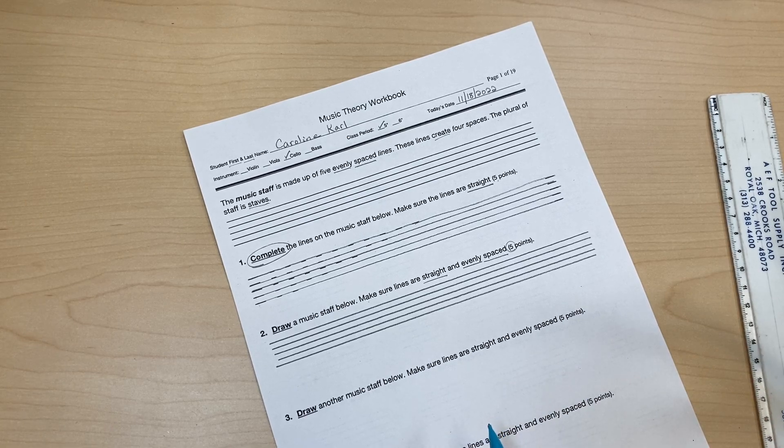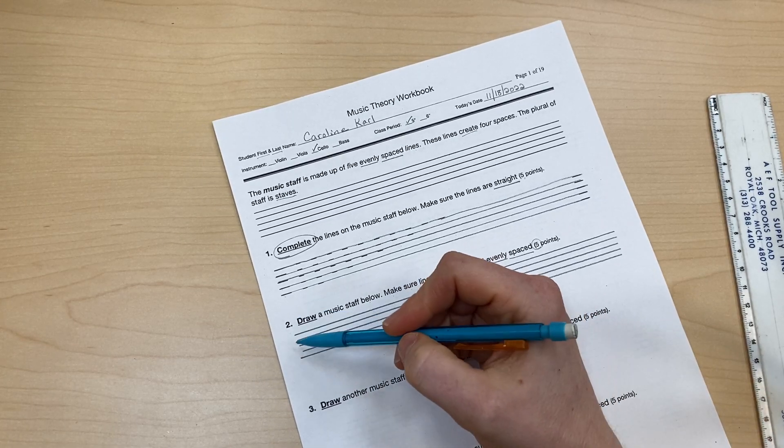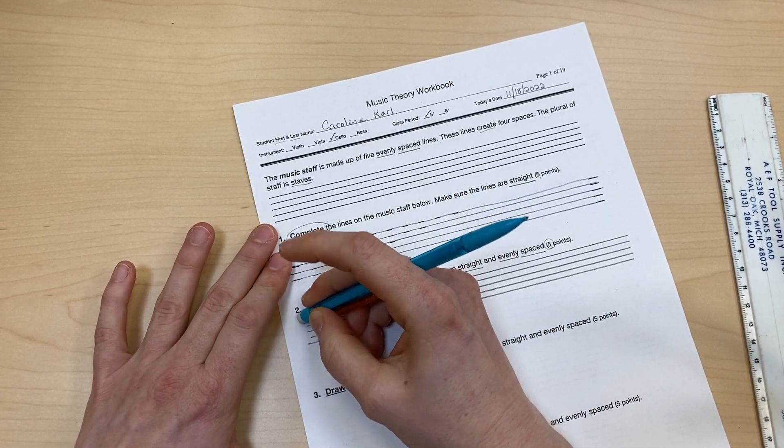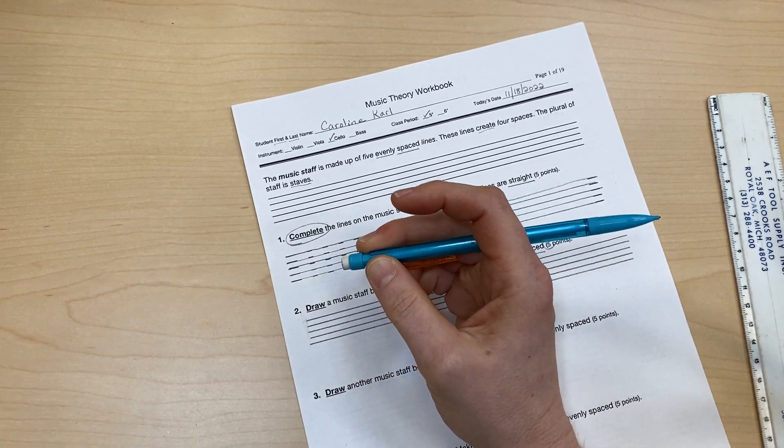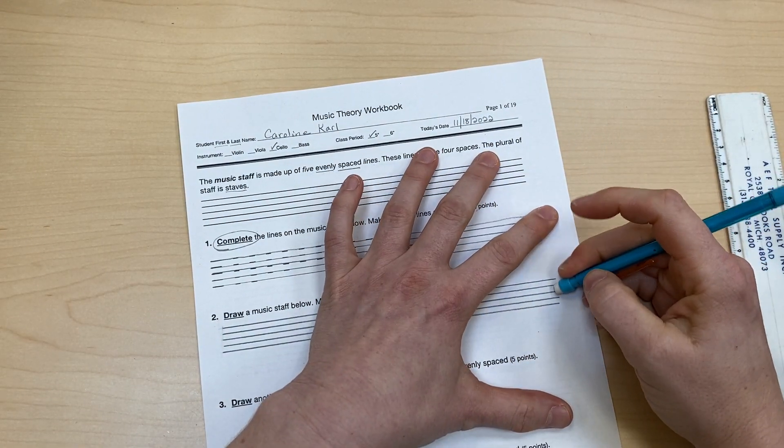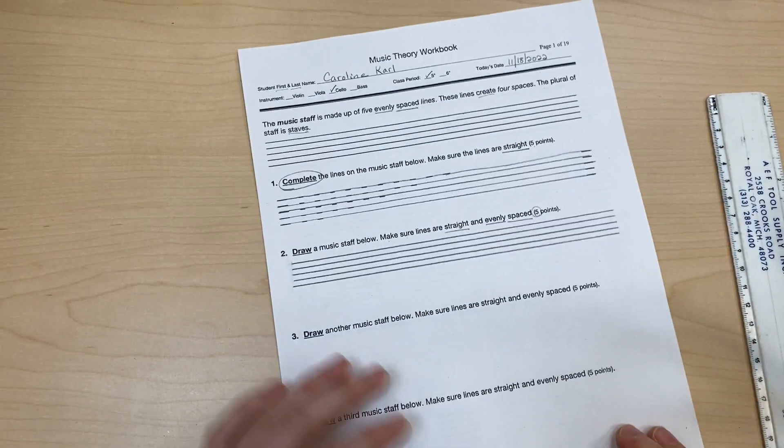And then I need to make sure that I have five lines. Now, that's not bad. They're not all starting in the same place over here. So I'm just going to erase the edges to make it even. Looks like I ended all right, but these two are a little longer. So I'm going to fix those. There we go.